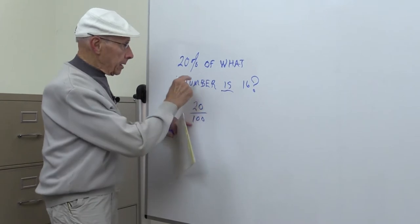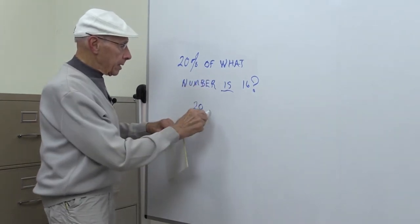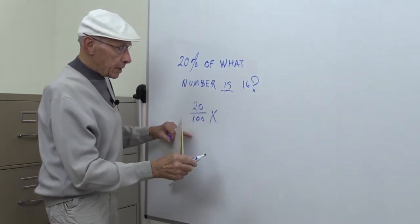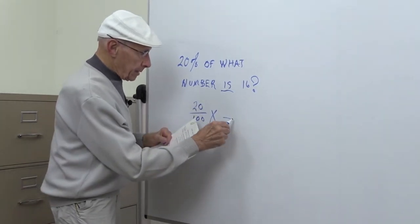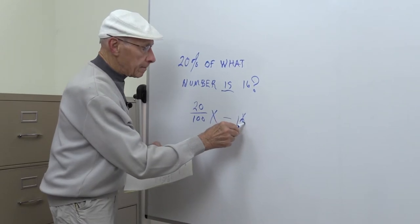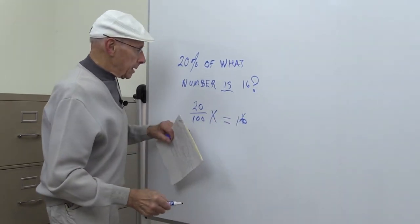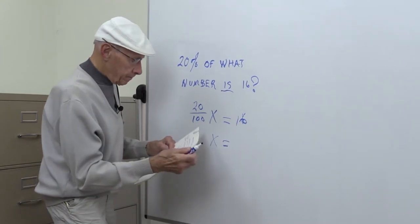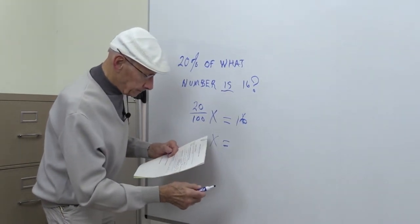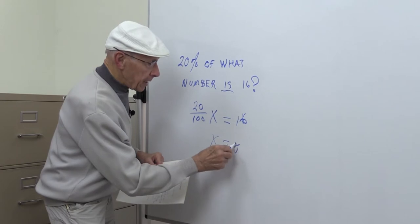And 'is what number' - the number is X, we'll say - is equal to 16. Now, solving for X comes out to be 80.